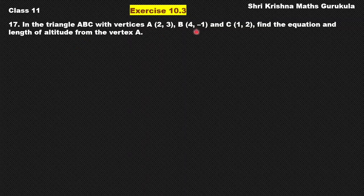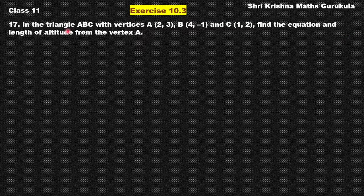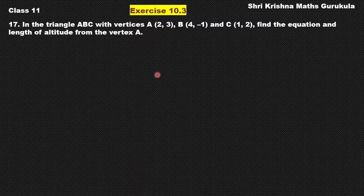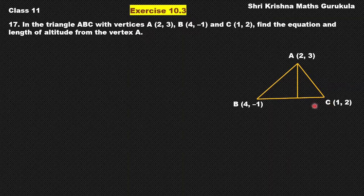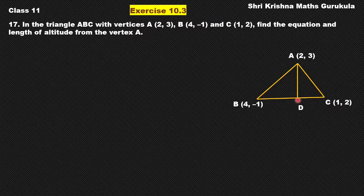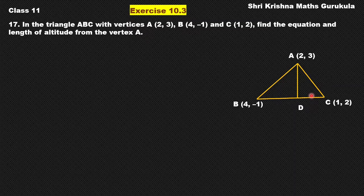In a triangle ABC, the coordinates of the vertices A, B and C are given to us. We have to find the equation and also the length of the altitude from the vertex A. We are drawing a perpendicular or altitude from A to its opposite side BC, calling the foot of the altitude D. So we have to find the equation of AD and the length of AD. Since it is an altitude, it is perpendicular to line BC — this angle is 90 degrees. We will use the condition of perpendicularity to solve this.